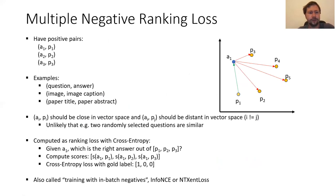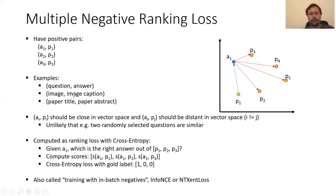A nice loss function is the multiple negative ranking loss. It's easy to train with, and easy to get training data for — you just need positive pairs: a question and its answer, an image and its caption, or a paper title and its abstract. The intention is that this pair should be close in the vector space. All other positives in the same batch should be distant from the anchor. The intuition is that if you randomly select two questions, it's quite unlikely they are similar, so they will be on completely different topics. You compute this loss using cross entropy.